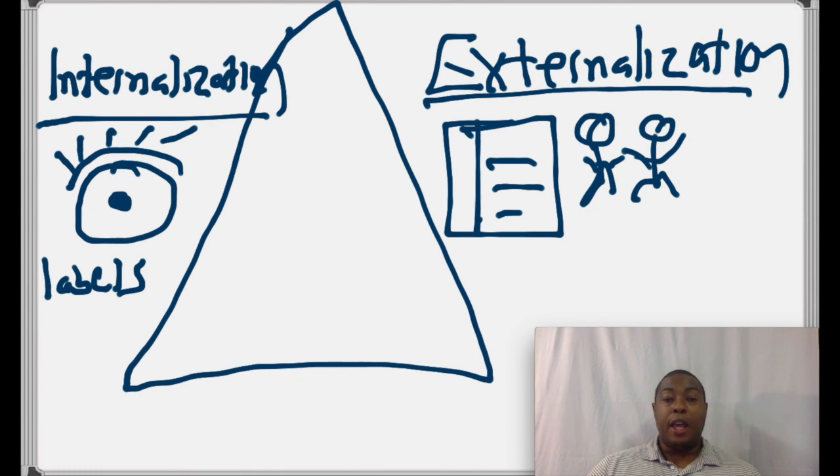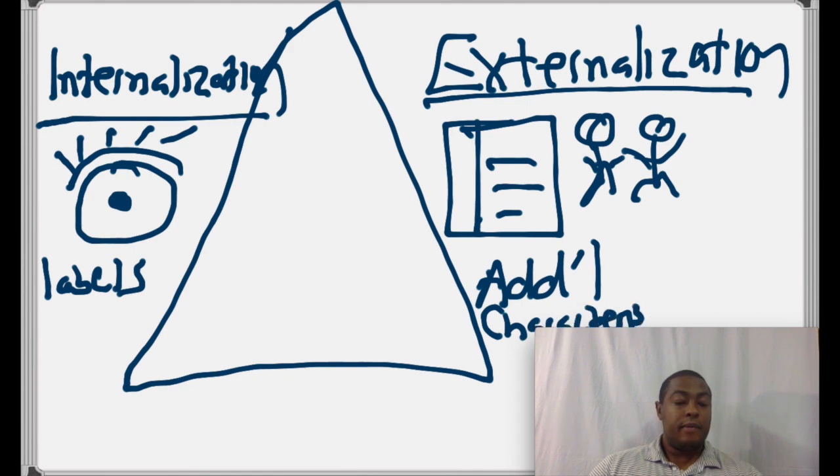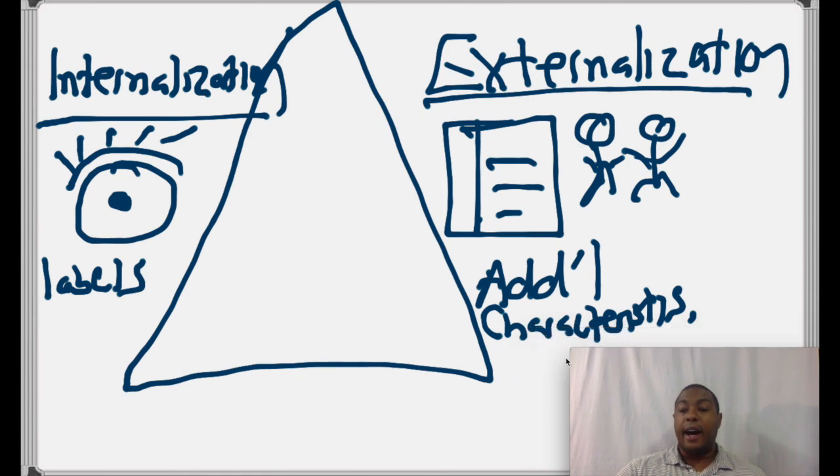Now, one way to think about this given what we've read in Martin so far is that internalization has to do with labels. Externalization has to do with the additional characteristics. Remember how in Martin's chart, he uses the idea of labels to make sense of how people essentialize and then people will draw upon all these additional characteristics, this baggage to affirm their internalization or affirm their label. This is another way of breaking down that same process. So you have the label, which is internalization. You have externalization, which are the additional characteristics.